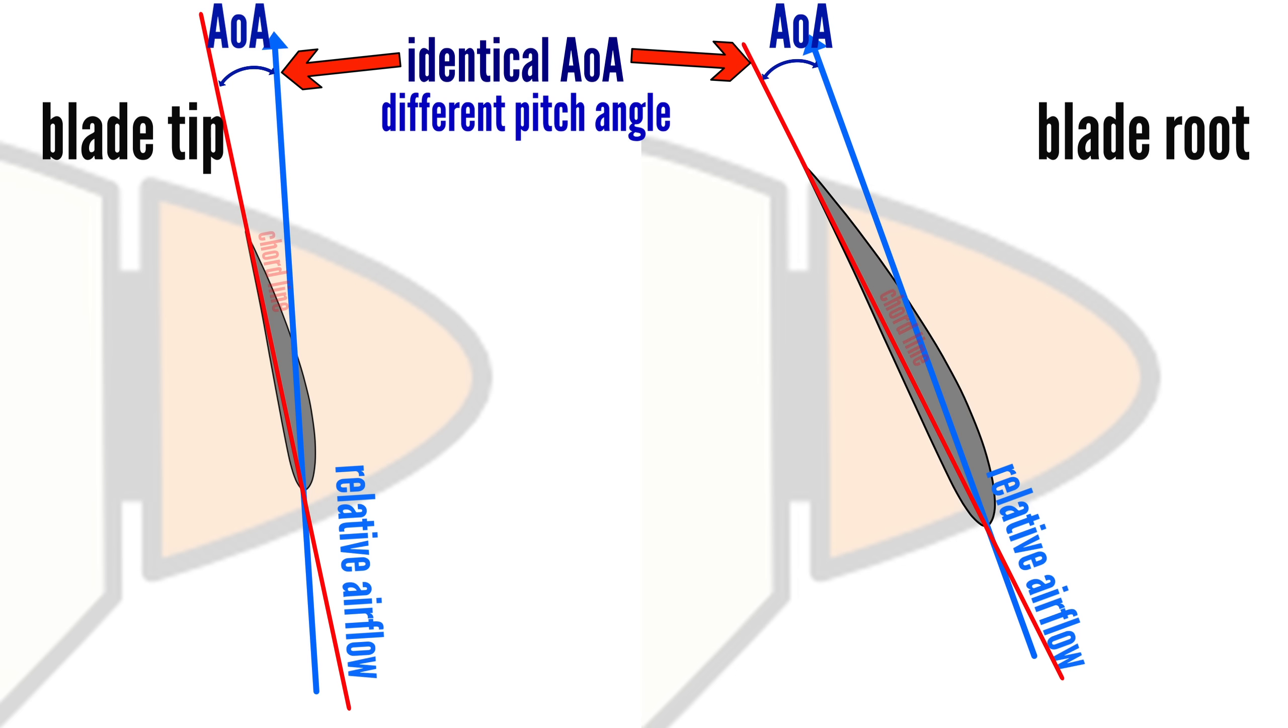So to maintain a consistent angle of attack across the entire blade, the blade must be twisted. Without this twist, the varying angle of attack along the blade's span would lead to uneven loading. The amount of twist and its resultant load-changing properties also allows propeller manufacturers a way to optimize a propeller for certain applications.